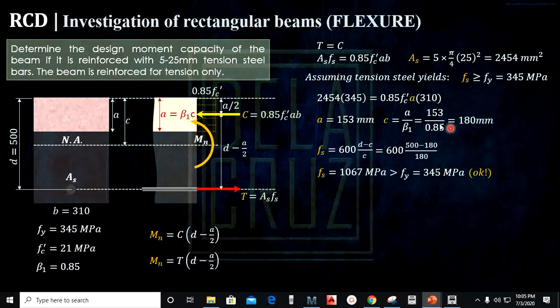Now if we have the value of C, we can actually solve the Mn. I would rather use T times (D minus A/2) because we have area of steel. Substitute T as As·fy. Take note it yielded, so fy is what we'll use, not this. By substituting, the nominal moment strength capacity is 358.55.